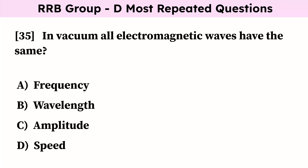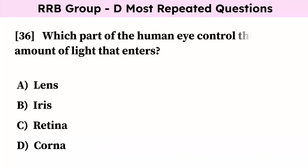In vacuum, all electromagnetic waves have the same what? Correct answer is speed. Which part of the human eye controls the amount of light that enters? Correct answer is iris.